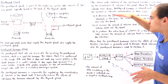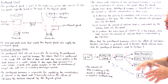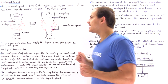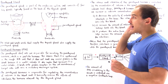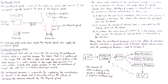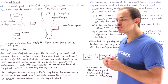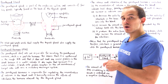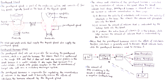Notice that these three things we just mentioned are the opposite of what calcitonin does — released by the thyroid gland. The parathyroid hormone reverses the effects of calcitonin. Whereas calcitonin actually decreases the concentration of calcium in our blood, the parathyroid hormone increases the concentration of calcium in our blood.